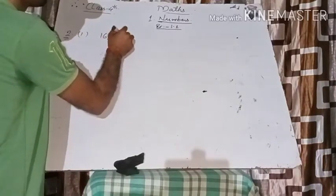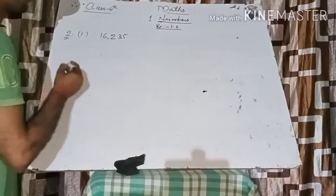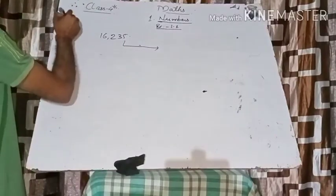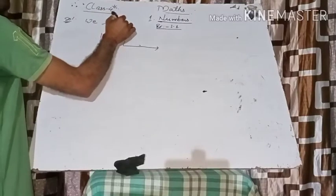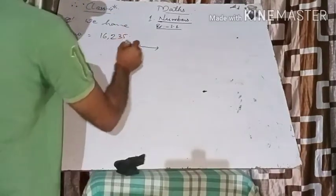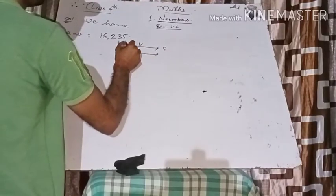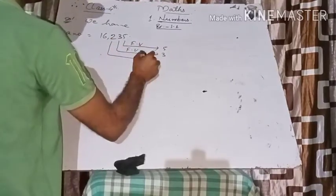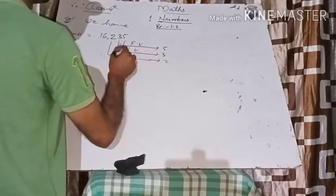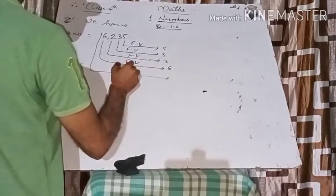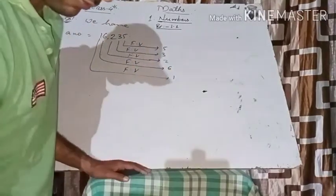The first number is 16235. Write the face value of each digit. The face value of 5 is 5, face value of 3 is 3, face value of 2 is 2, face value of 6 is 6, and face value of 1 is 1. Remember, face value is simply the digit itself.